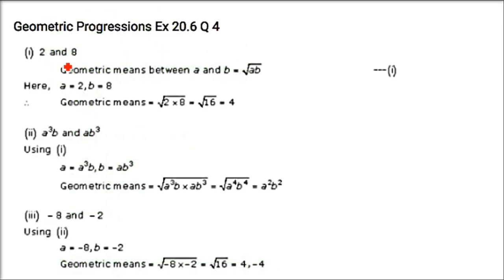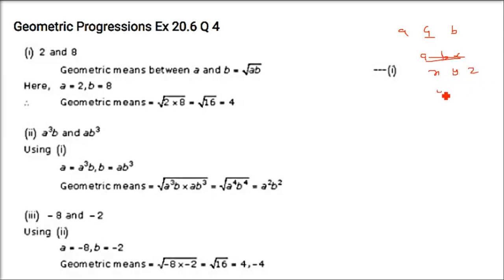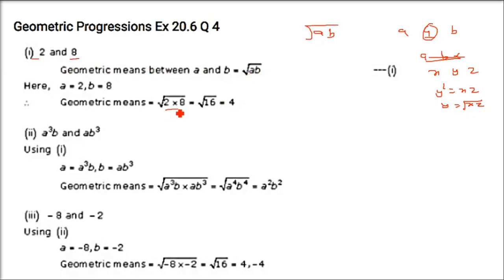Now we have to find the geometric mean. If A, G, B are three terms in GP, then G² = A × B, so G = √(AB). For example, with 2 and 8: G = √(2 × 8) = √16 = 4.